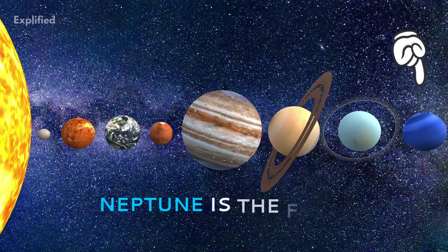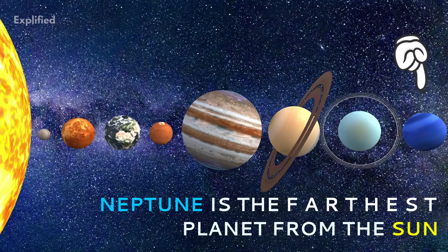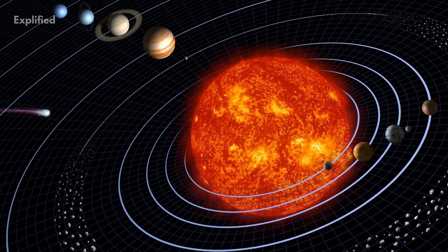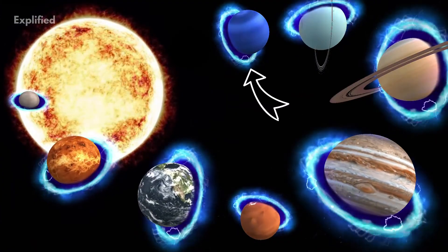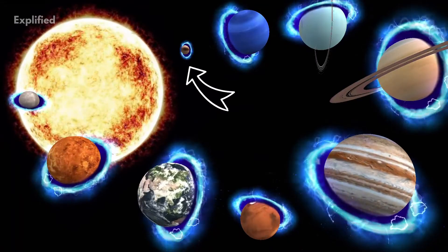Number 1. Neptune is the farthest planet from the Sun. This may sound pretty known, but its history is pretty complicated. It was the most distant planet until Pluto's discovery in 1930.